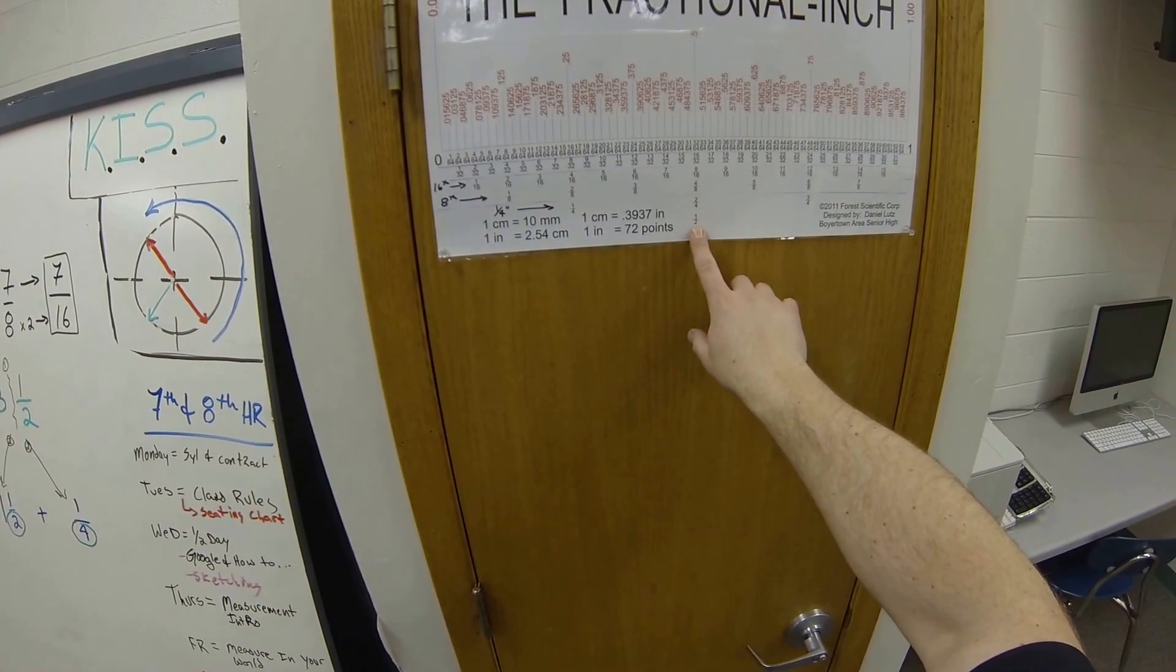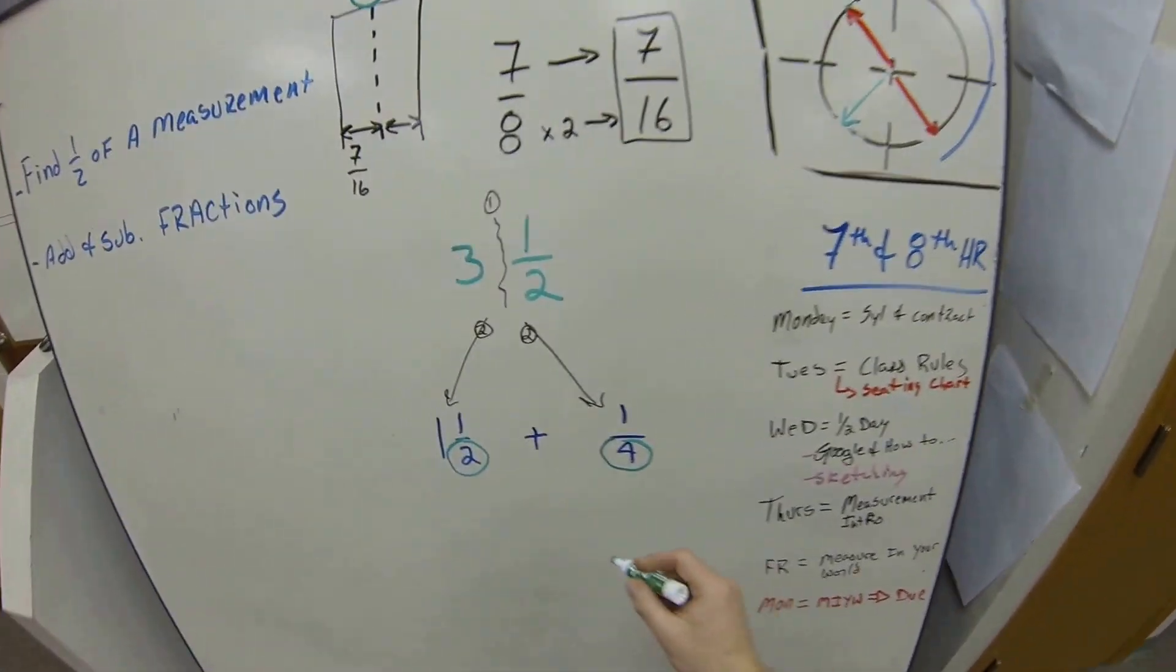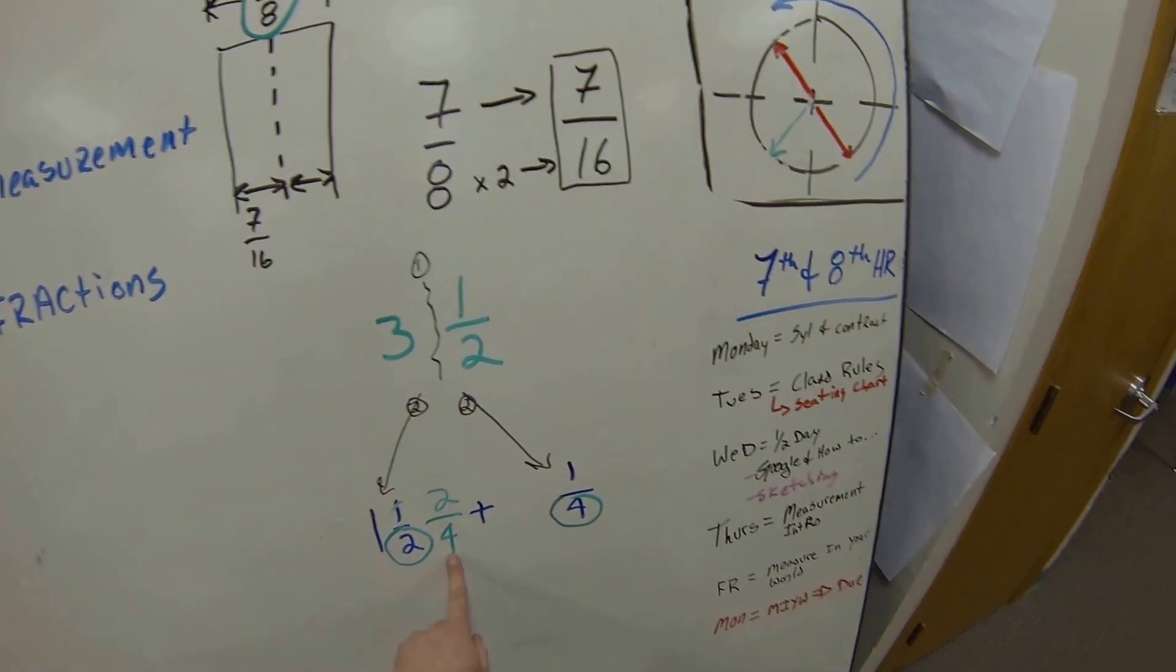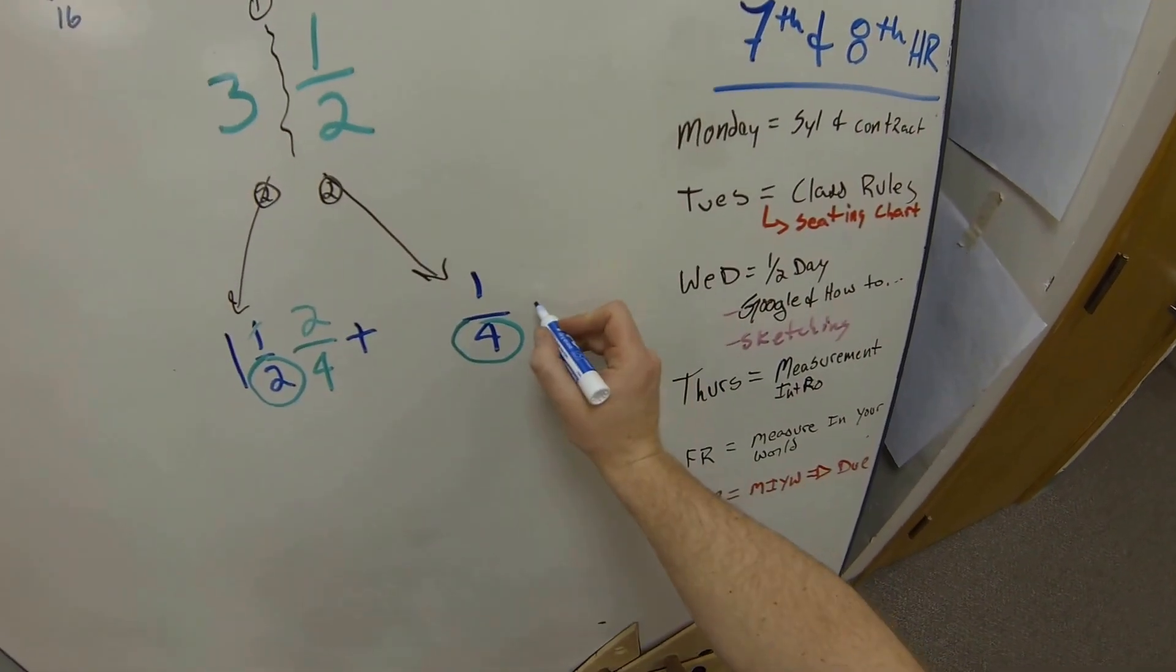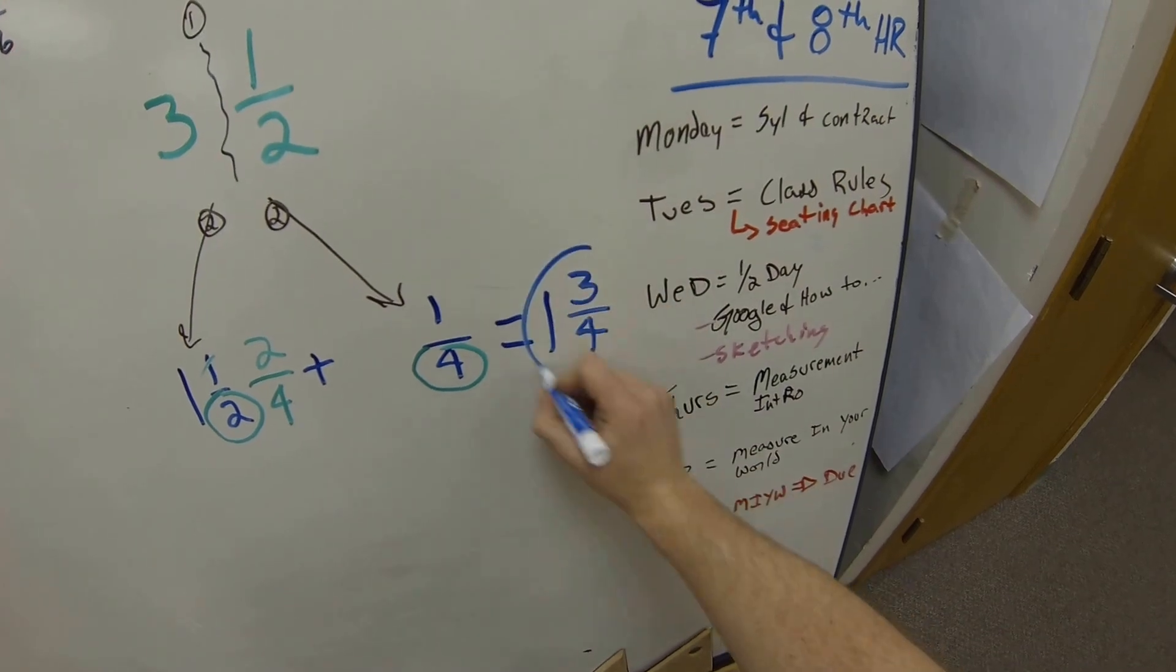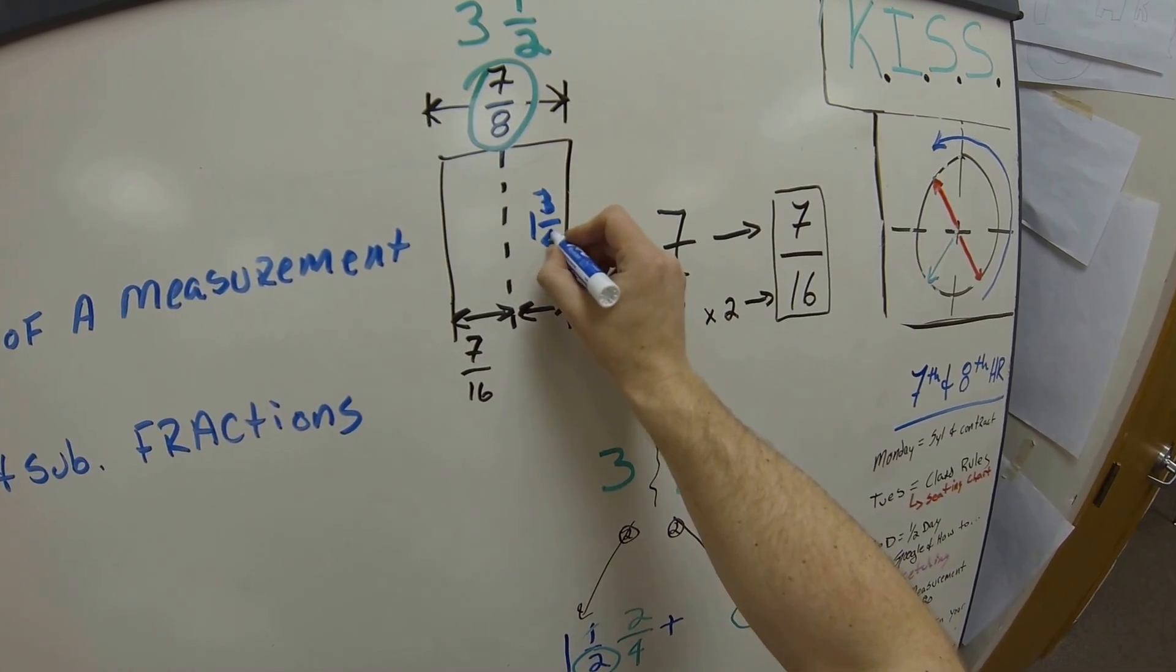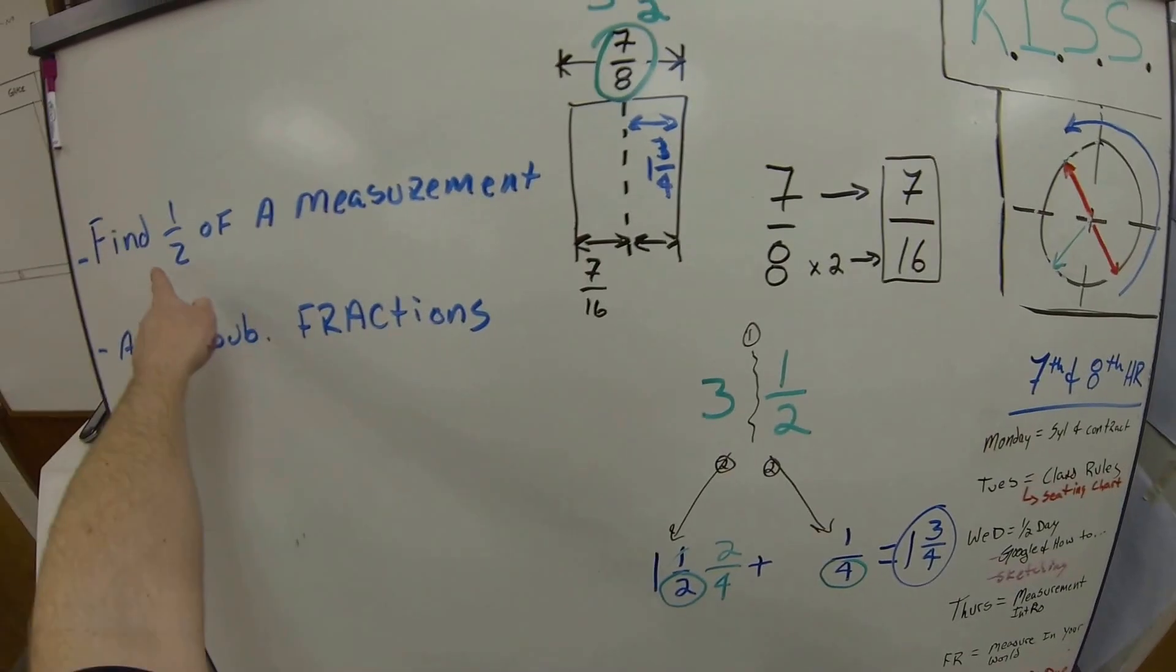Well, how many quarters are in a half? We look at that, we have 2/4. So we need to convert this to 2/4. Cross that out. So 1 and 2/4 plus 1/4 is going to equal 1 and 3/4. So that means each section here then is 1 and 3/4. That's an example of how to find half a measurement and also how to add a fraction together.